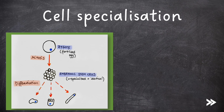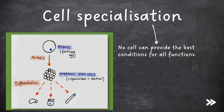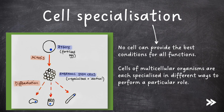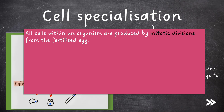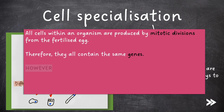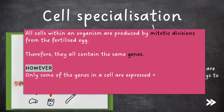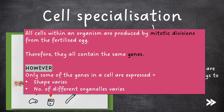Now that we've covered the main organelles found in eukaryotic cells, we just need to have a look at cell specialization. No cell can provide the best conditions for all functions. Therefore, cells of multicellular organisms are each specialized in different ways to perform a particular role. The zygote, which is the fertilized egg, undergoes mitosis to form embryonic stem cells, which are each unspecialized and identical. Embryonic stem cells undergo differentiation to become all the different cells within an organism. All cells within an organism are produced by mitotic divisions from the fertilized egg, so they all contain the same genes. However, only some of the genes in a cell are expressed, so the shape of the cell may vary and the number of different organelles also varies.